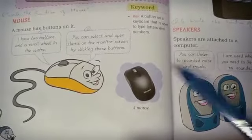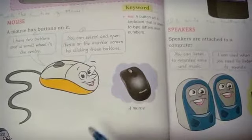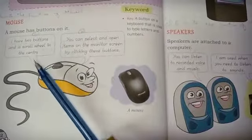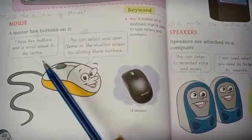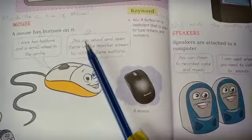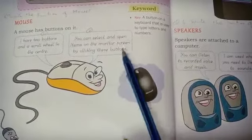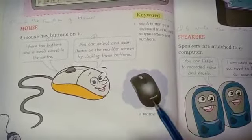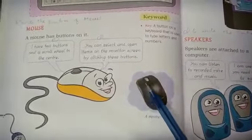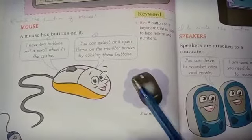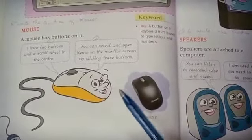First part of computer is mouse. You can see here, it's a mouse. A mouse has buttons on it. It has two buttons and a scroll wheel in the center. You can select and open items on the monitor screen by clicking these buttons. Students, this mouse has two buttons on it, right side and left side, and in the middle is scroll wheel. Through these buttons you can select something in the monitor or open items.